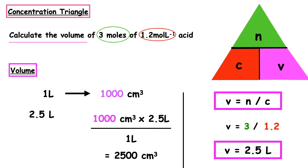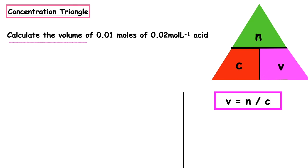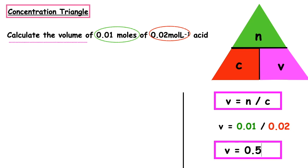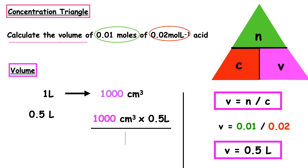Pause the video and have a go. Calculate the volume of 0.01 moles of a 0.02 moles per litre acid. V = N ÷ C = 0.01 ÷ 0.02 = 0.5 litres. To convert to centimetres cubed: 1 litre = 1000 cm³; 1000 × 0.5 ÷ 1 = 500 cm³.